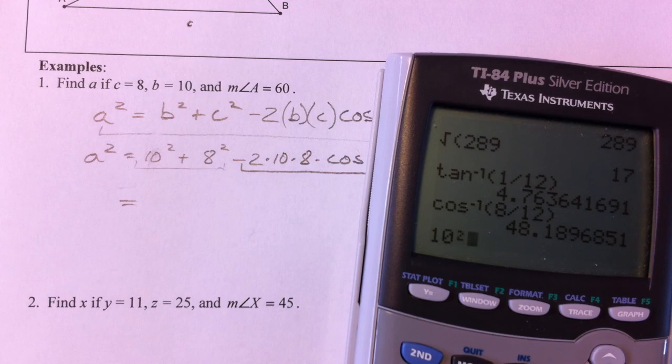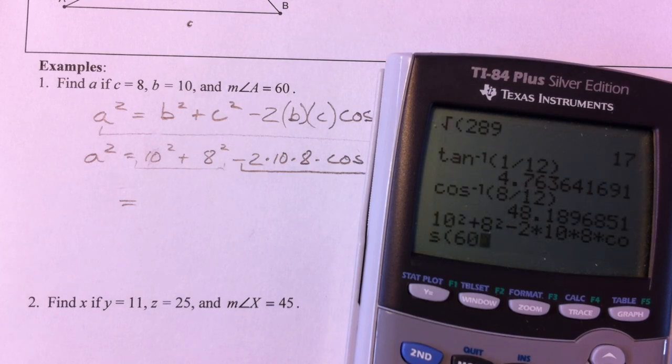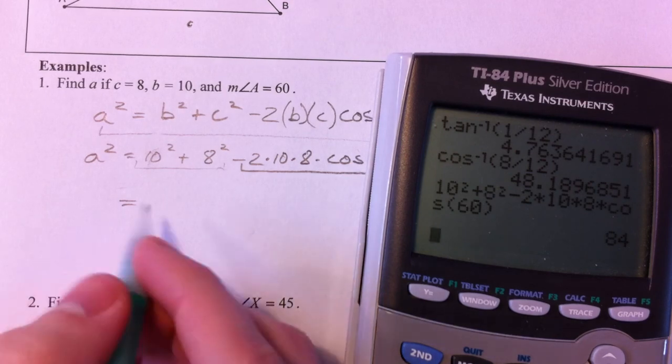So 10² plus 8² minus 2 times 10 times 8 times the cosine of 60 degrees. So that's 84.